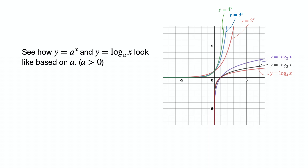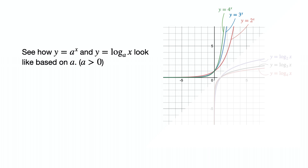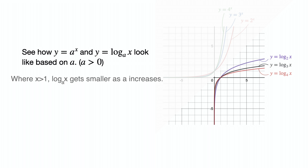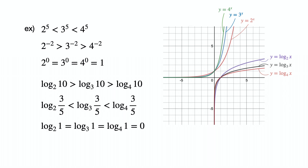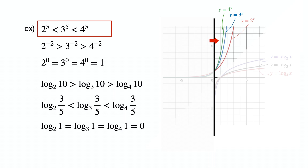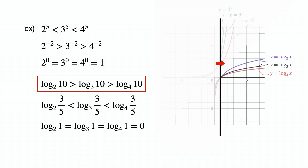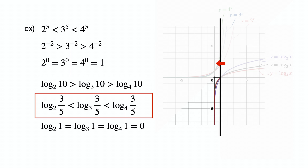Let's see how these functions change as a changes. For exponential functions, a to the x increases where x is positive as a increases, but decreases where x is negative. For log functions, log base a of x decreases where x is greater than 1 as a increases, but goes up where x is less than 1. For inequalities: when exponents are the same and positive, the larger base gives the greater number; but if the exponents are negative, the smaller base gives the greater number. When arguments are the same and greater than 1, the smaller base gives the greater log value; but if the arguments are less than 1, the greater base gives the greater log value.